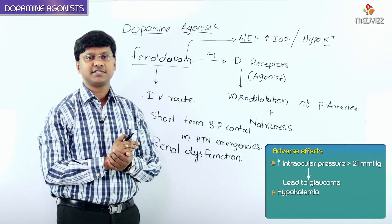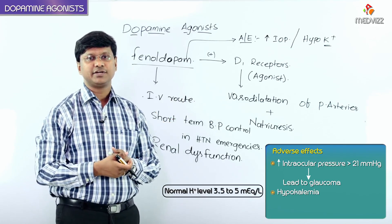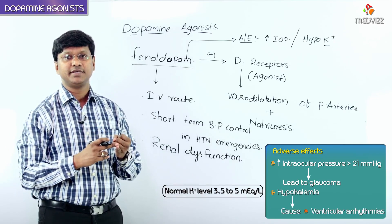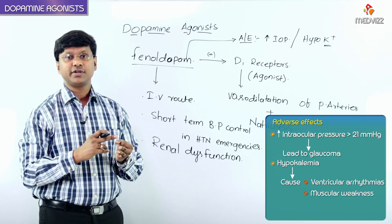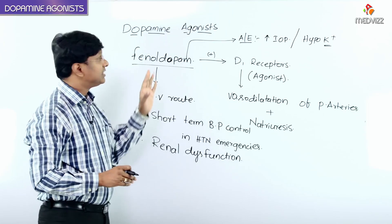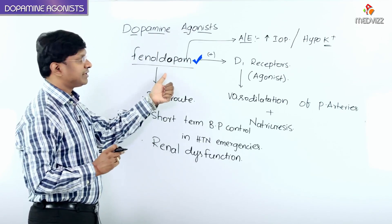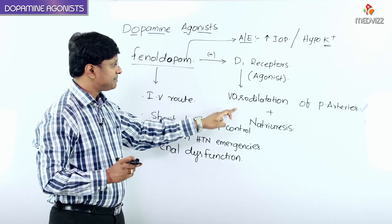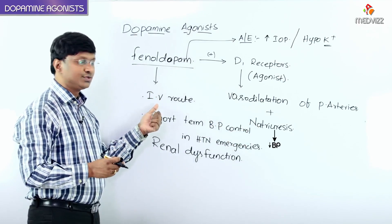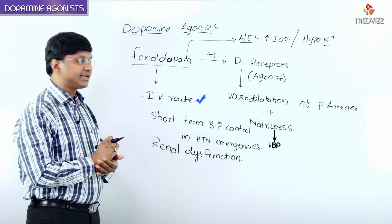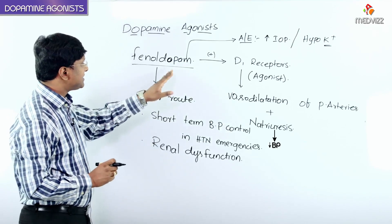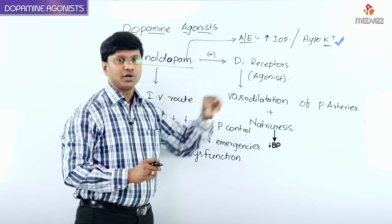The normal potassium level is around 3.5 to 5 mEq/L. Due to hypokalemia, the individual can have ventricular arrhythmias, muscular weakness, polyuria, and polydipsia. In summary, fenoldopam — the dopamine agonist antihypertensive — acts on D1 receptors causing peripheral arterial vasodilation plus natriuresis, reducing blood pressure. It is used in hypertensive emergencies via intravenous route and in renal dysfunction patients to improve renal perfusion. Adverse effects include increased intraocular pressure and hypokalemia.